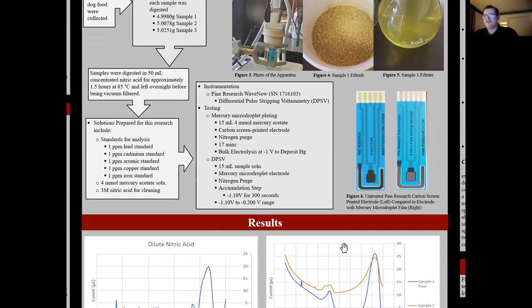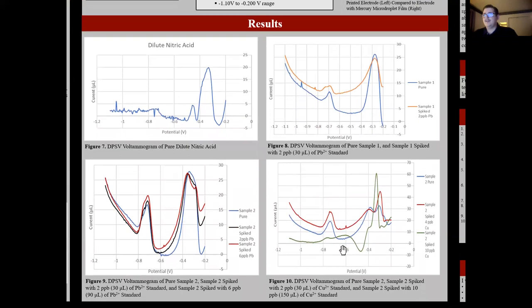As far as results for this, I've chosen to show these four voltammograms for this poster. In figure seven, you can see a voltammogram for pure dilute nitric acid. This acid has been diluted in order to not dissolve the mercury off of the electrode, but otherwise it remains unadulterated. There has been nothing added to it.